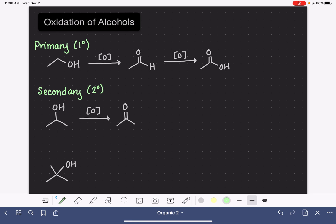Last but not least, down here at the bottom, we have a tertiary alcohol. A tertiary alcohol is one where the OH group is bonded to a carbon that is bonded to three carbons.